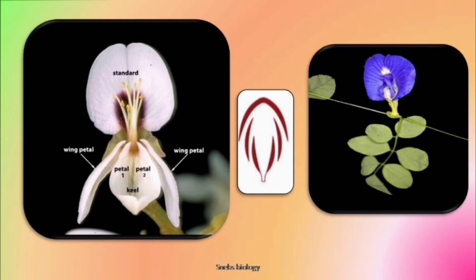The arrangement is: the posterior petal, the standard, is the largest with both margins exposed. Then there are two more petals — the wings — with one margin in and one margin out. The last two, the anterior petals, are the smallest; they are fused to form a boat-like structure and are known as keels. This arrangement is known as papilionaceous arrangement of petals, characteristic feature of Papilionaceae.